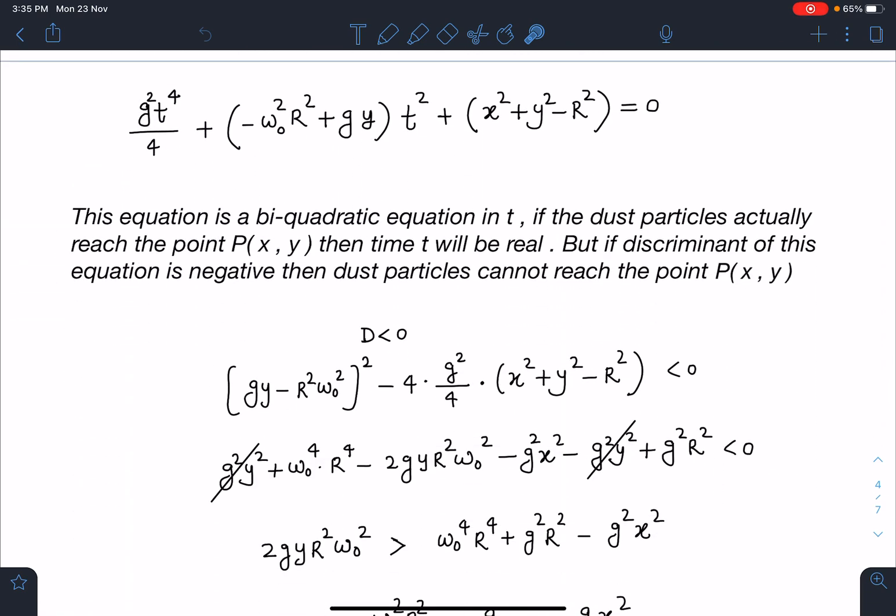In this equation, as you can see here, this equation is a bi-quadratic equation in t. If dust particles actually reach the point (x, y), then time t will be real. But if discriminant of this equation is negative, then dust particles cannot reach point P. So if I apply discriminant < 0 here, this is B² - 4AC < 0.